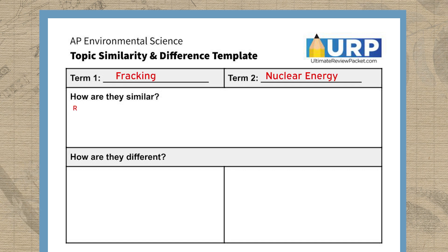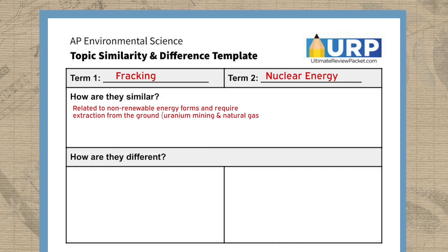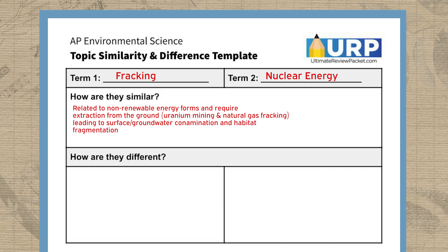If you're struggling to make these topic-to-topic connections, a really simple activity that can help you get better at it is just picking two vocab terms from a unit and trying to figure out a way that they're similar and a way that they're different. There's a nice similarities and differences template linked in the video description below, but you can also just make a quick T-chart in your notebook or on a sheet of paper. For our practice terms today, let's use fracking and nuclear energy. Starting with the similarities: they're both related to non-renewable forms of energy, and they both require extracting a fuel resource from the ground, which could cause surface or groundwater contamination and habitat fragmentation. They're also both related to a form of electricity production that converts water into steam with heat, having that steam turn a turbine connected to an electric generator.